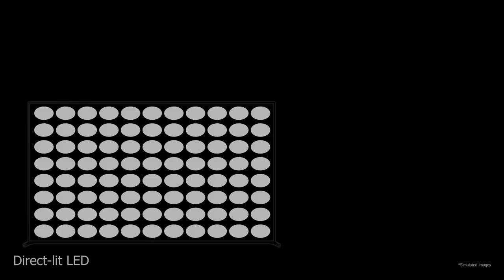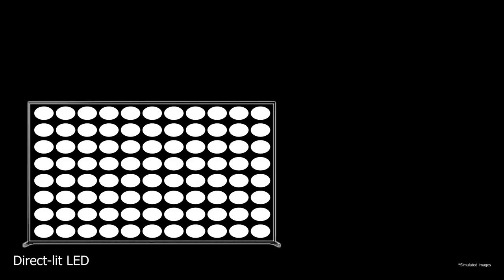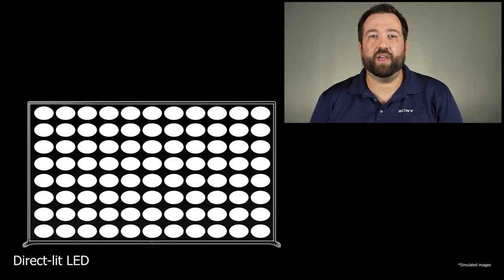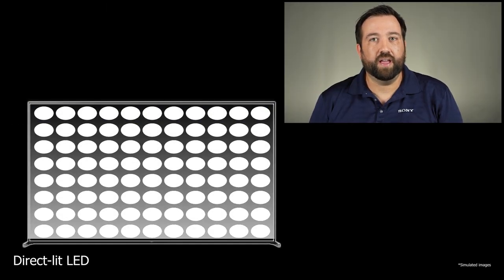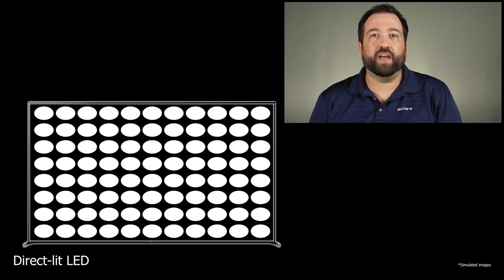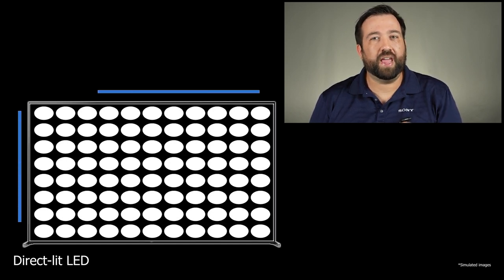For the longest time, LCD TVs have used a direct backlight. This type of lighting fully illuminates the panel from behind, and with the light pointing outwards towards the viewer, the lighting structure allows great uniformity and brightness, but it's at the expense of average black levels.